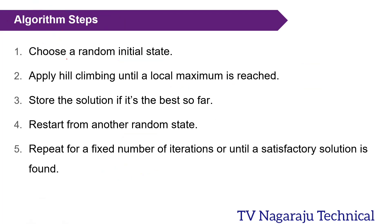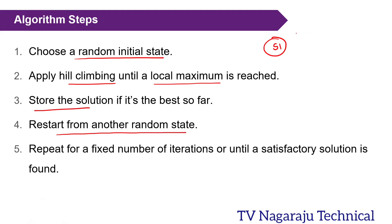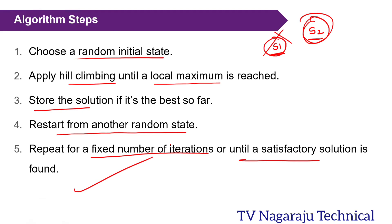The algorithm steps are: first, randomly choose one state as the initial state and apply hill climbing until reaching a local maximum. Store the solution found. In the next repetition, restart from another random state; if the new solution is better than the previous one, keep it and ignore the old one. This same process is repeated for a fixed number of iterations or until a satisfactory solution is found.